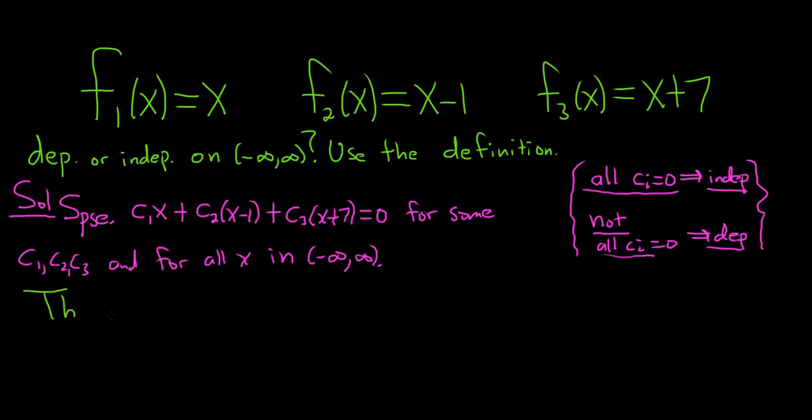So then, nothing can be done with the c₁ and the x, so we keep that. We can distribute the c₂ here, so we'll get c₂x and then distributed here we'll get minus c₂. Then here we get c₃x and then plus 7c₃. And this is equal to zero.